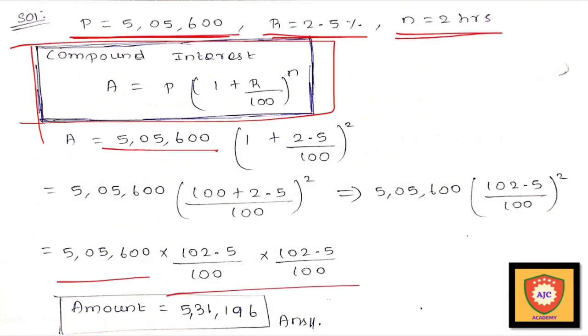So if we substitute the values, the amount of bacteria is equal to 5319.6.